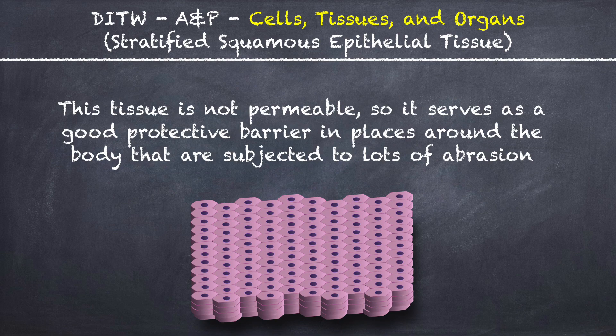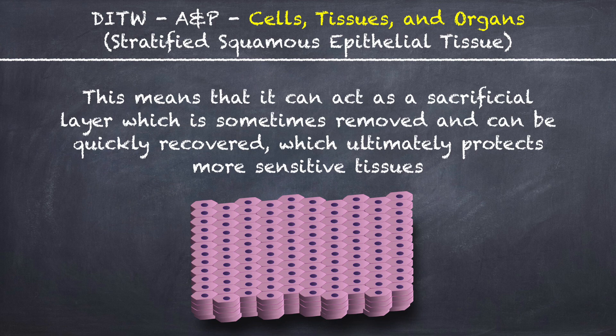The tissue is not permeable, so it serves as a good protective barrier in places around the body that are subjected to lots of abrasion. This means that it can act as a sacrificial layer which is sometimes removed and can be quickly recovered, which ultimately protects more sensitive tissues.